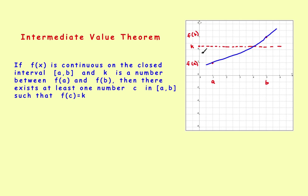If it's continuous, there exists a number k between a and b — so k is somewhere between here and here. And there exists at least one number c in the interval such that f at c is equal to k. So what that means is, if you go from here and come down, somewhere there's a value of x that guarantees the function will equal this number k.